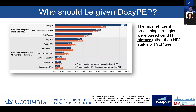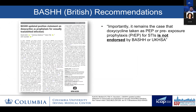Dr. Michael Traeger, while working at Fenway in Boston, actually used their EHR to define 10 DOXYPEP prescribing strategies and look at the proportion of individuals prescribed DOXYPEP and proportion of diagnoses averted. He found that the most efficient prescribing strategies were based on STI history rather than HIV status or PrEP use. That work really made it into a lot of the recommendations you'll see around the world.